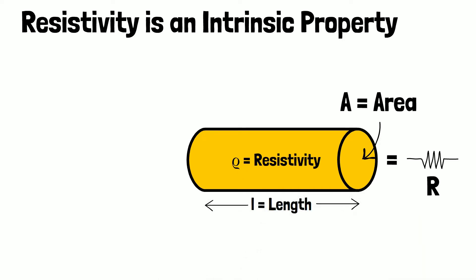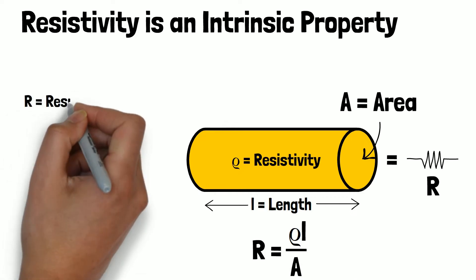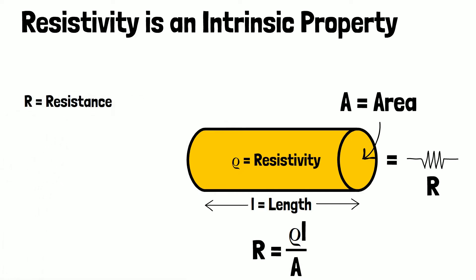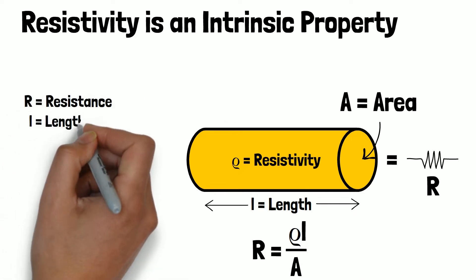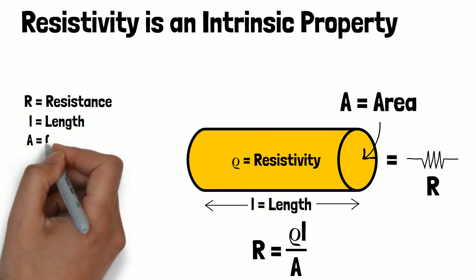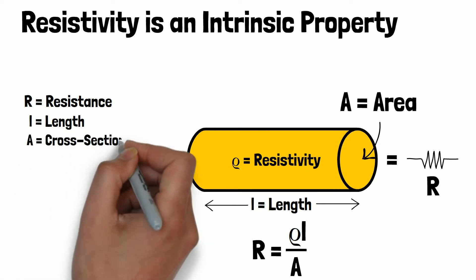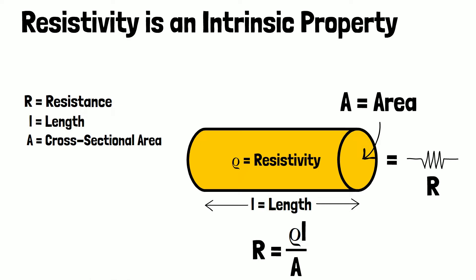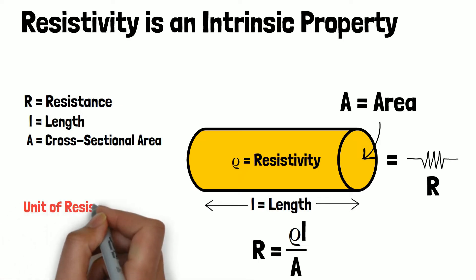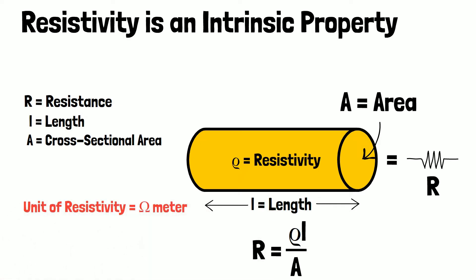The resistivity of a material is independent of its length and area. R equals rho times L divided by A, where R is the resistance, rho is the resistivity of the material, L is the length, and A is the cross-sectional area of the material. The unit of resistivity is ohm meter.